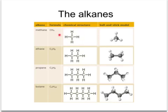Methane is just one of a whole series of compounds with similar structures called the alkanes. There's another one with two carbons called ethane, three has propane, and four is butane. Each of these are called saturated compounds because they've got only single carbon-carbon bonds in their structure.